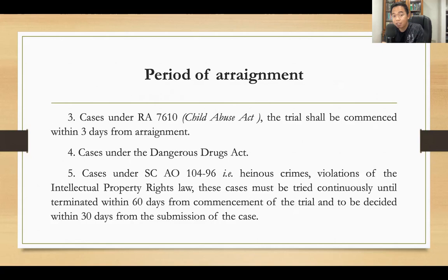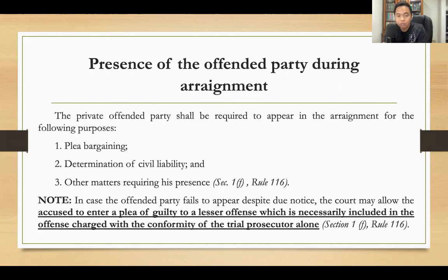In cases involving child abuse, the trial shall commence within three days from the date of arraignment. For cases under the Dangerous Drugs Act and for heinous crimes and violations of intellectual property rights law, these cases must be tried continuously until terminated within 60 days from commencement of trial and decided within 30 days from submission of the case.